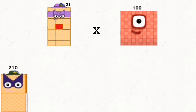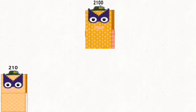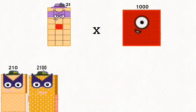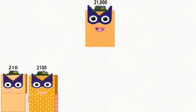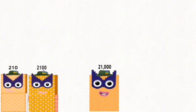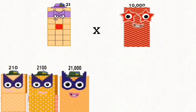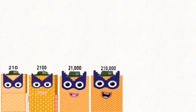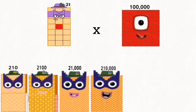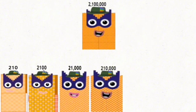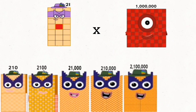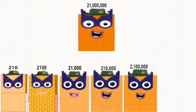Twenty-one times one hundred equals two thousand one hundred. Twenty-one times ten thousand equals two hundred ten thousand. Twenty-one times one million equals twenty-one million.